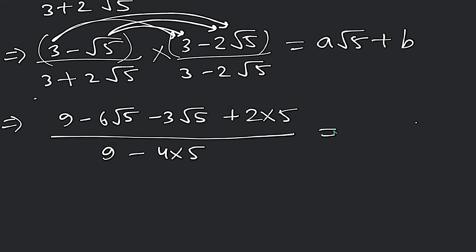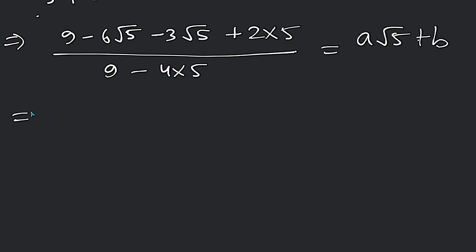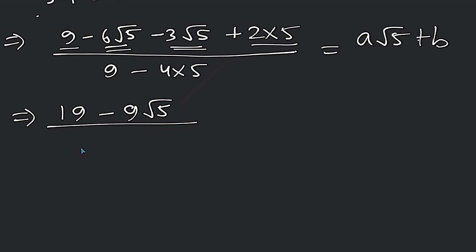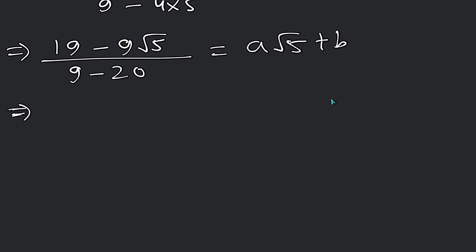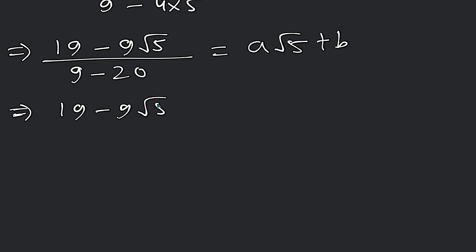2 squared is 4, root 5 squared is 5, so 4×5 = 20. In the numerator we expand and add the normal numbers: 9 and 10 give 19. And for the √5 terms: minus 6√5 and minus 3√5 add together — we add the coefficients, so minus 6 minus 3 gives minus 9√5. So the numerator is 19 minus 9√5.